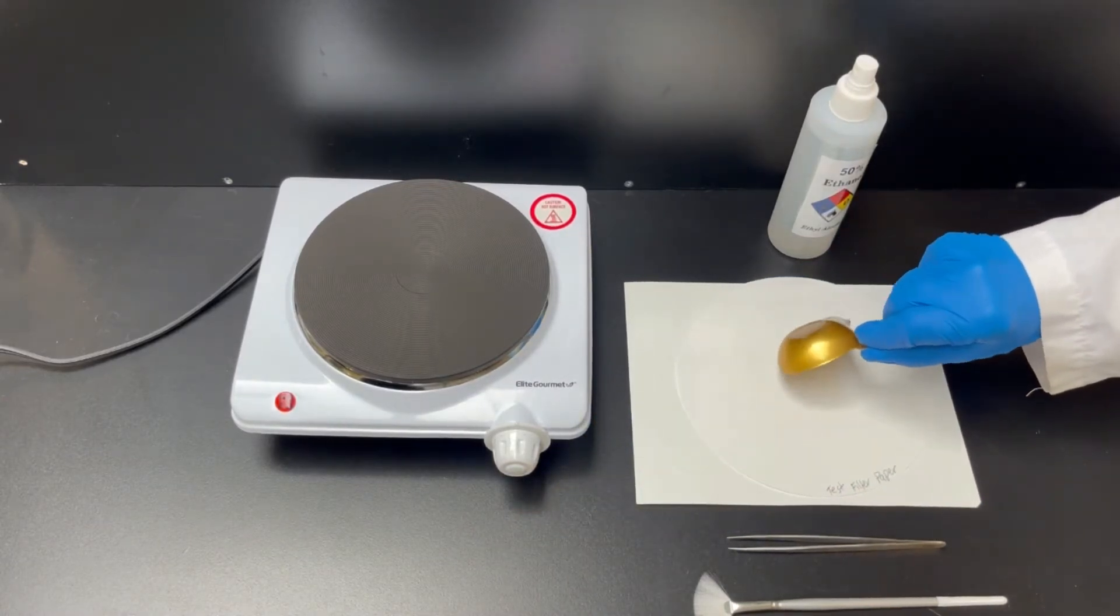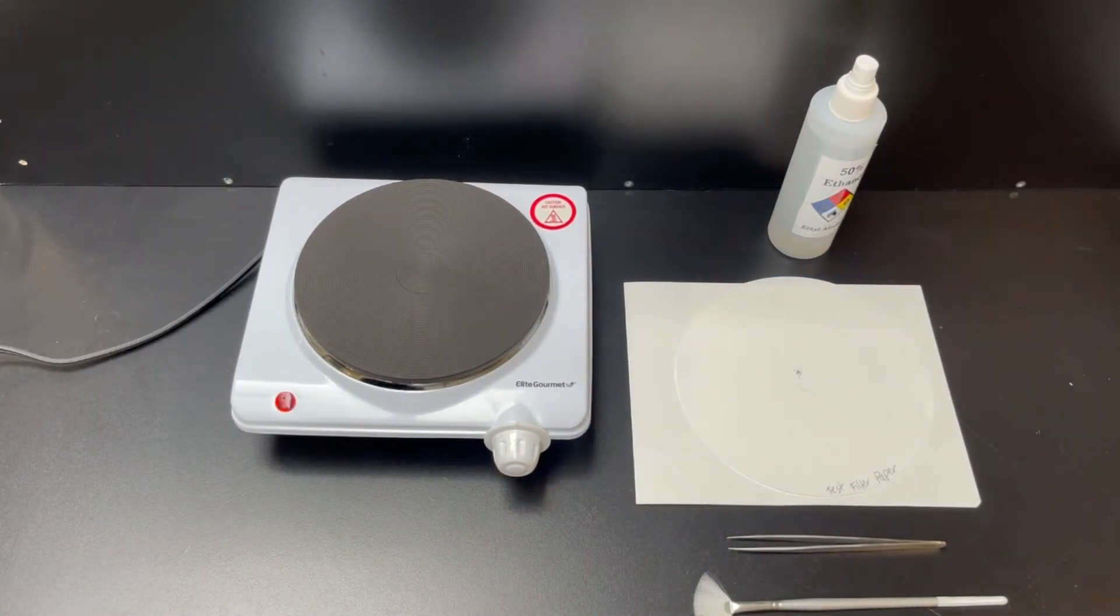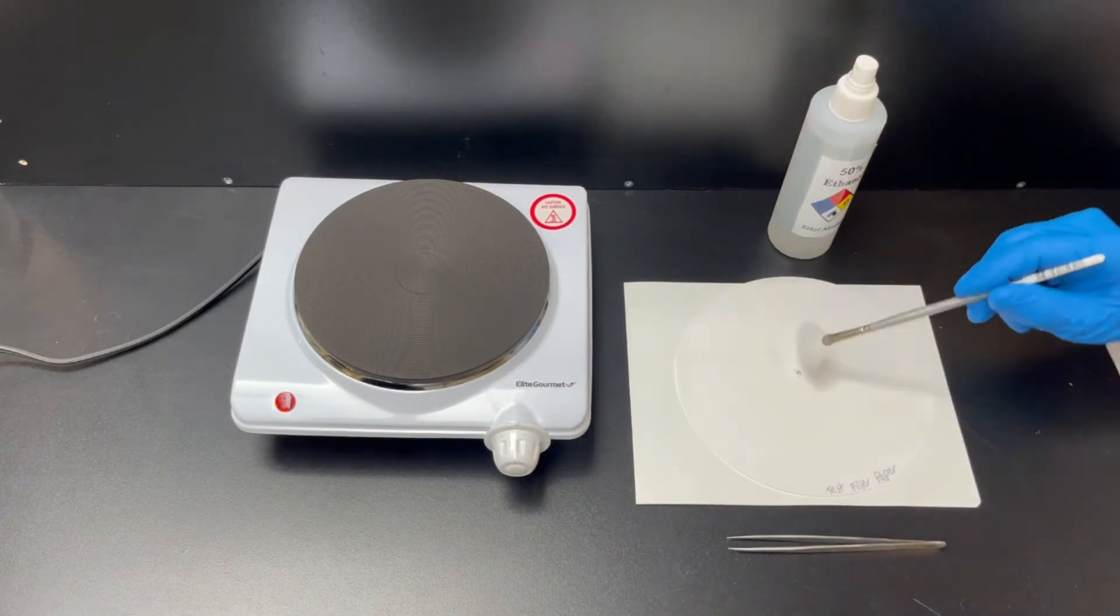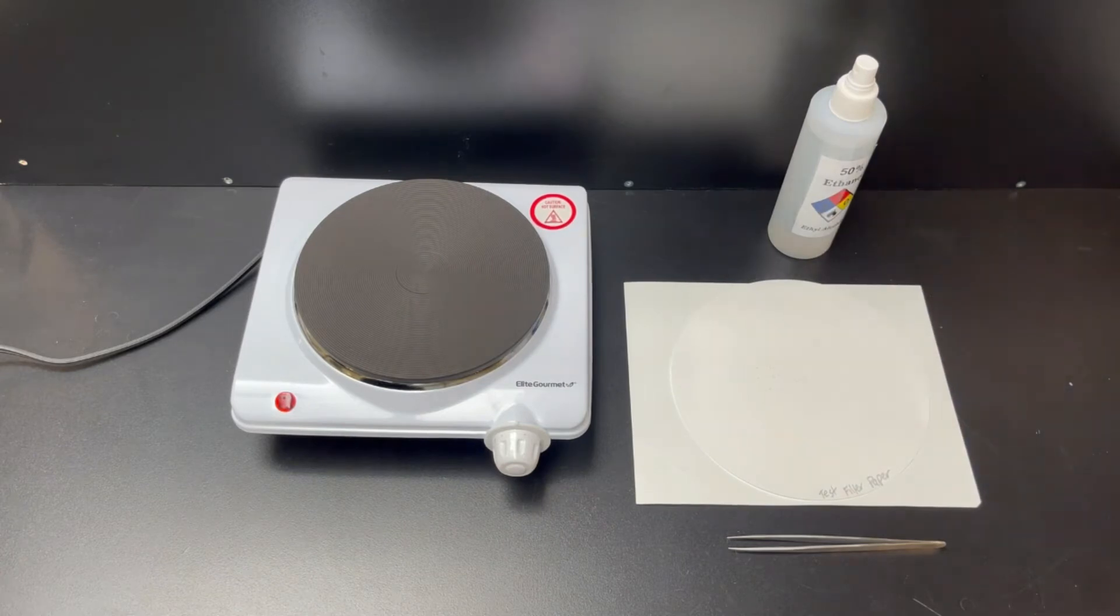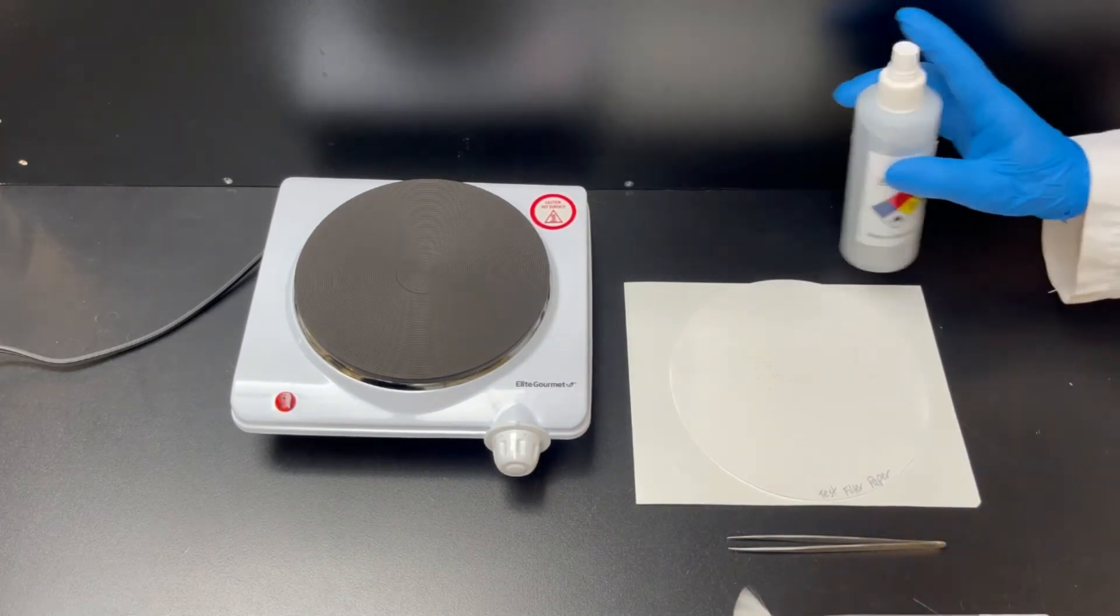Spread the Microtracer particles evenly onto an 18-centimeter filter paper using the artist fan brush. Use a spray bottle or misting device to disperse developing solution onto the filter paper.